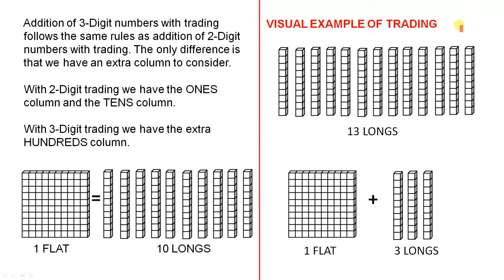Now here's a visual example of trading. Visual means we can actually see what's going on. Here we have thirteen longs. Now let's see if we can do some trading. The trading means that we're going to get rid of some of these longs and get a flat. See if we can do some trading.